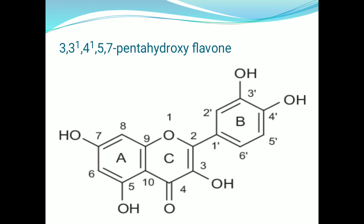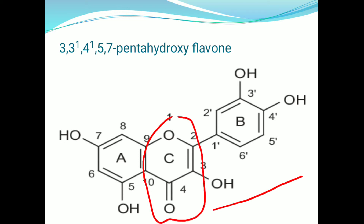This is the structure of quercetin. In this structure, the middle ring — the C ring — is a heterocyclic ring, where oxygen acts as the hetero atom. The C ring also contains a C=O (ketone) group. Because of this ketone group, this compound belongs to the flavon group.